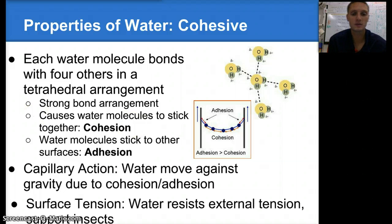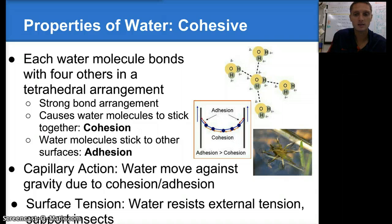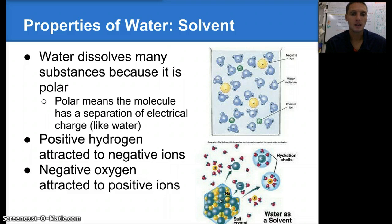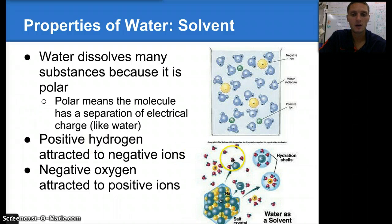Water also exhibits a property called surface tension — water's ability to resist an external force. This is one way that insects can be supported by water and can skim around on the water's surface. Another property of water is that it's a good solvent. Water dissolves many substances because it's polar — meaning the molecule has a separation of electrical charge. Because positive hydrogen is attracted to negative ions and negative oxygen is attracted to positive ions, water can break down different solids or solutes. Water dissolving salt is a great example of this.